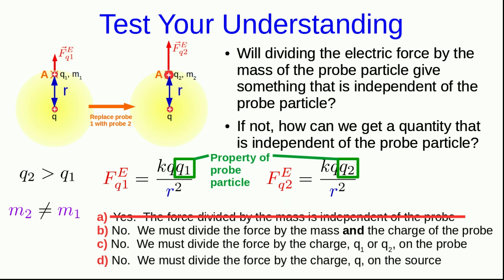Well, it's just those charges, the Q1 and the Q2. Those are properties of the probe particle. And so those are the parts we need to effectively drop out of the force to get the field. And to do that, we just have to divide the force by that charge, Q1 or Q2, which is carried by the probe. And so the answer is C.